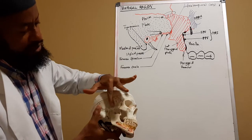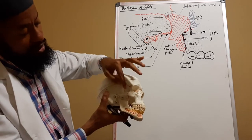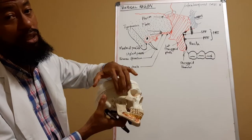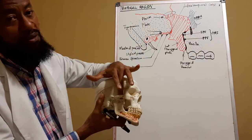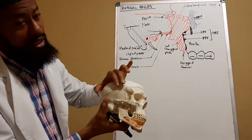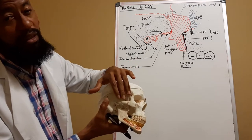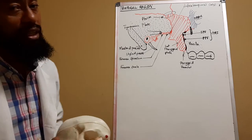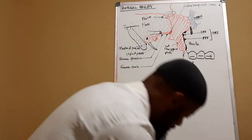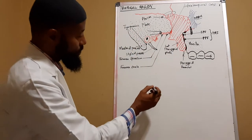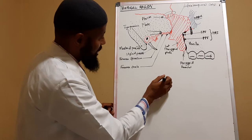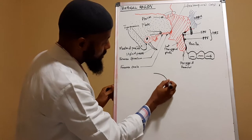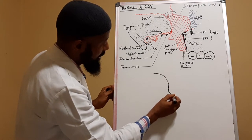So what we say is that the temporal region is the region that is superior to the zygomatic arch, and includes the deep soft tissues found in the temporal fossa, as well as the area that overlies the lateral aspect of the skull and the head. Now let's see what this looks like in this diagram here.